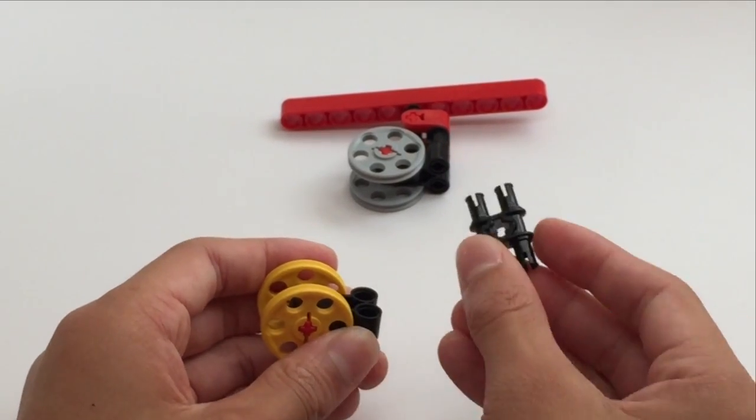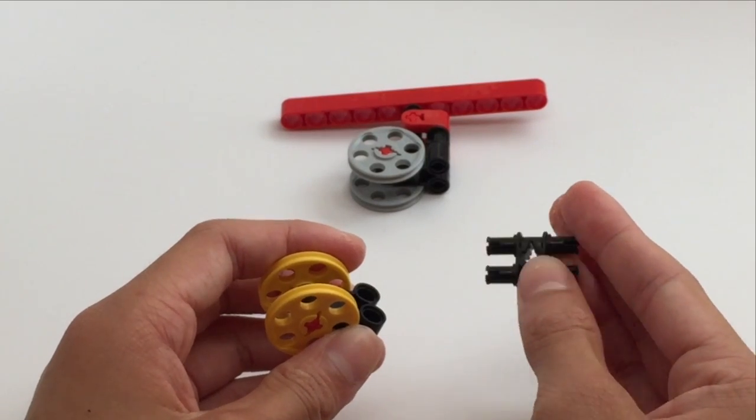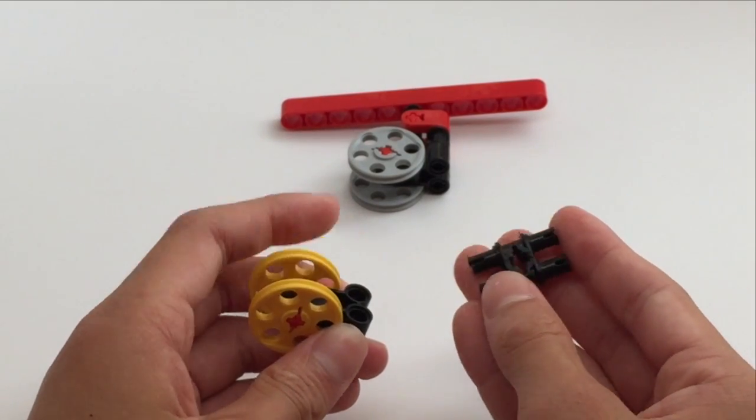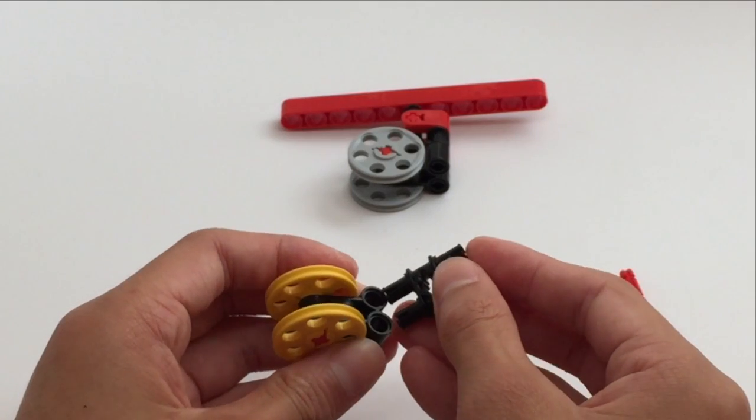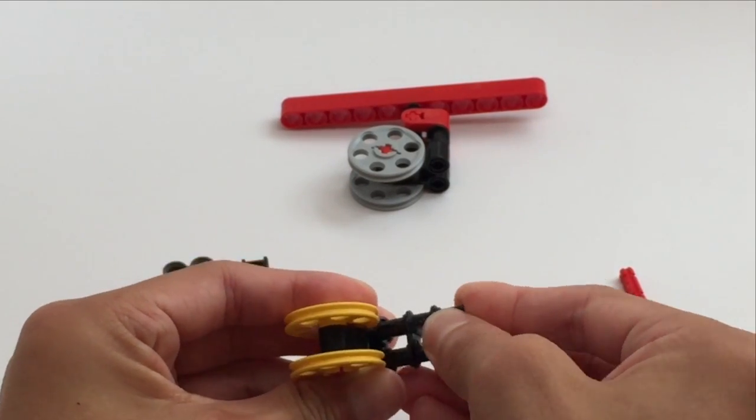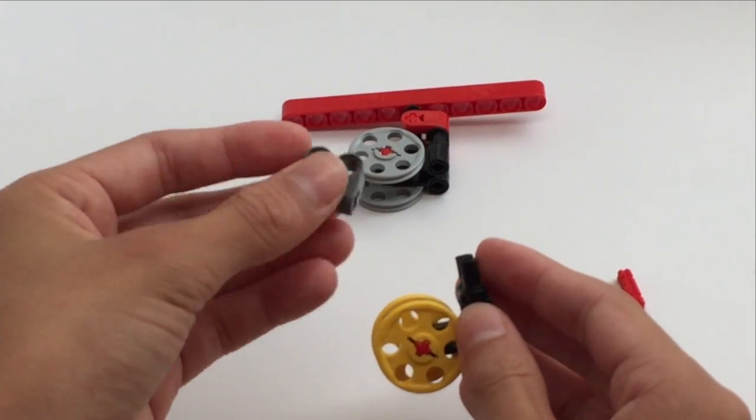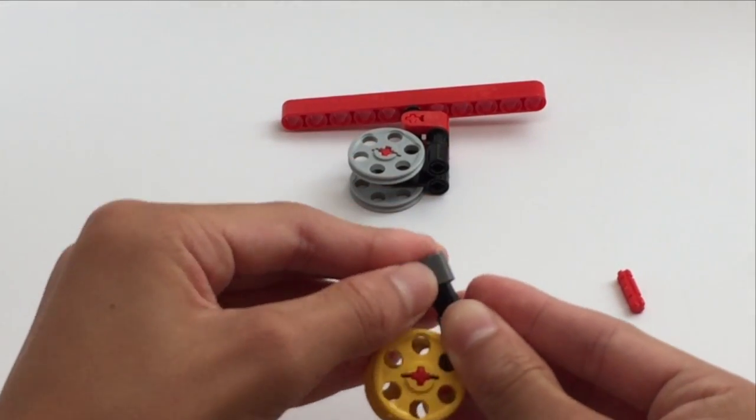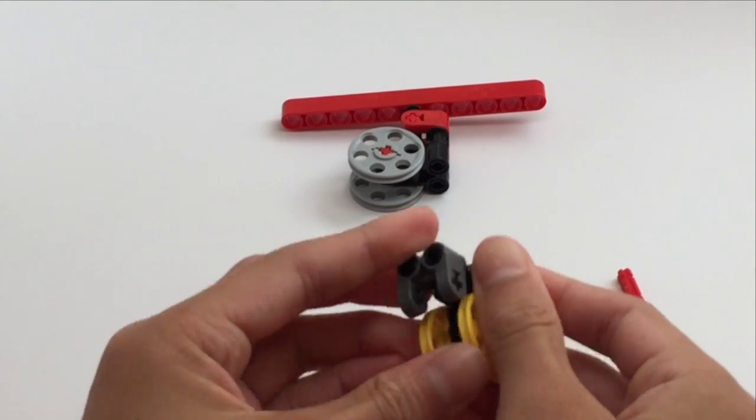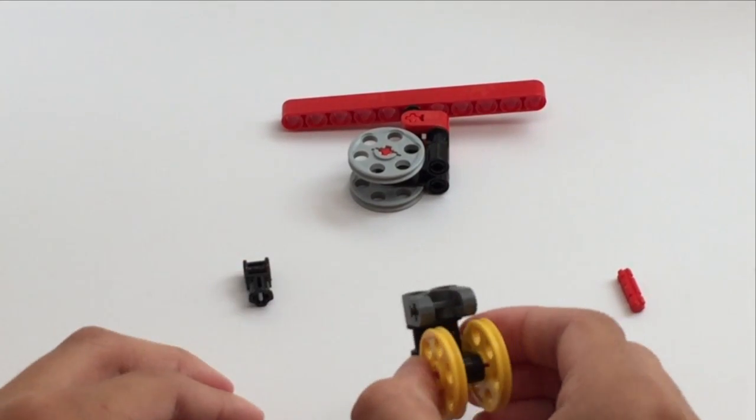Then you're going to attach this black piece over here. You can also use two long blue pegs if that works for you on top of here. Continuing on, we will then attach this angle changing piece on top, and here comes the tricky part.